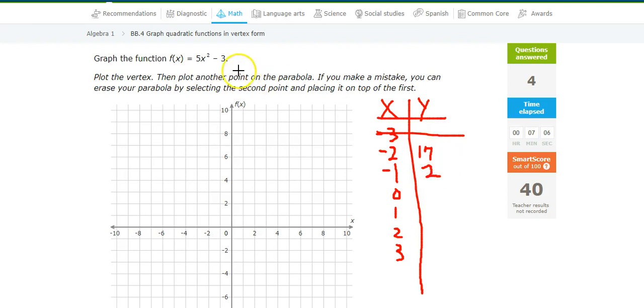I'm still looking for that bottom. Plug in a 0. 0 squared is 0, times 5 is 0, minus 3 is negative 3. Plug in a 1. 1 squared is 1, times 5 is 5, minus 3 is 2. I just found it. I just caught it. There it is. This is the bottom of it. That's all I need.